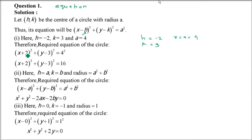In place of h you place -2, so x minus (-2) becomes (x + 2). In place of k you put 3, and in place of r you put 4. So that will be the equation.